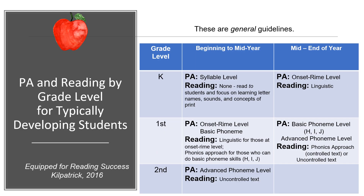This slide organizes the previous information by grade level, showing expectations from beginning to mid-year and mid to end of year. Again, this varies greatly depending on your student population and how much phonological awareness training has occurred. For kindergarten, students are at the syllable level — mostly being read to, learning letter names and sounds — then moving to the onset rhyme level and the linguistic approach. In early first grade, most students benefit from the linguistic approach, then transition to the phonics approach.